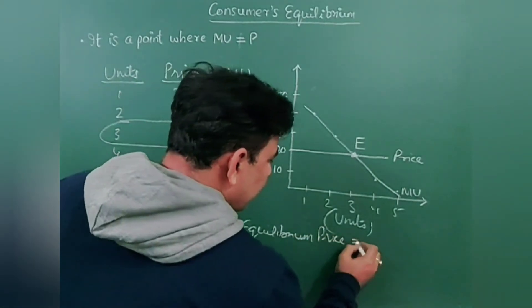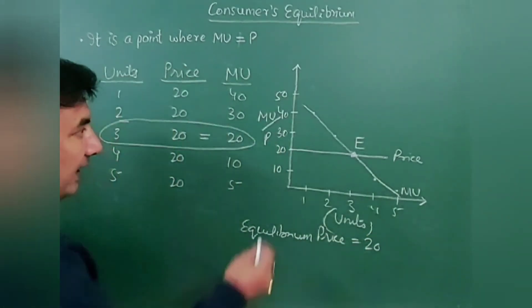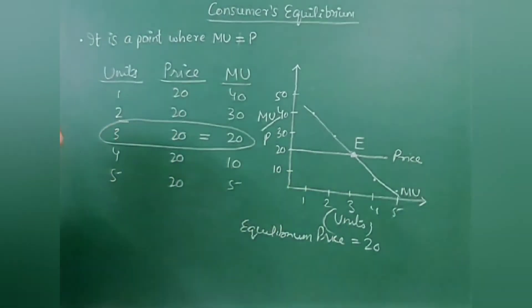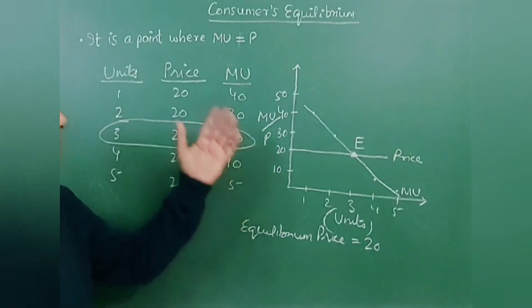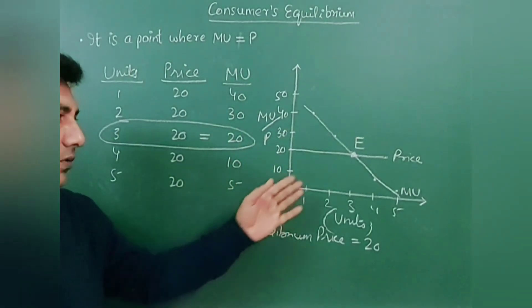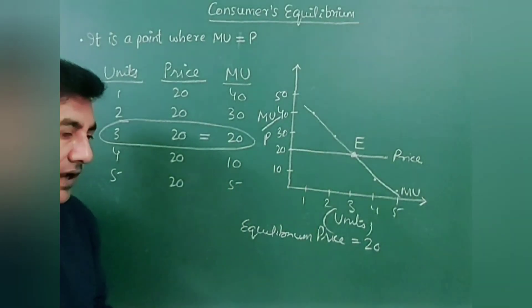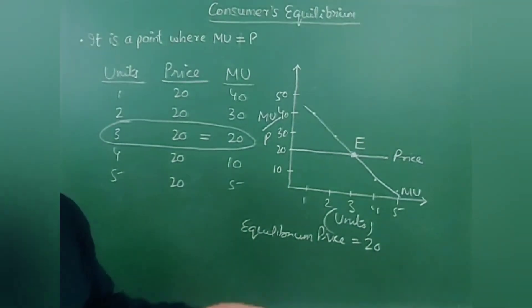So this is how you have to draw the schedule: write the definition, draw the schedule, and then the graph. And the assumptions of this law will be similar to that of the previous one.